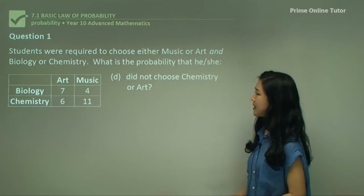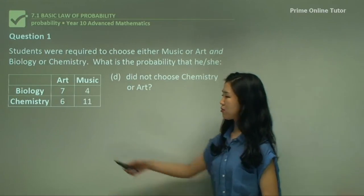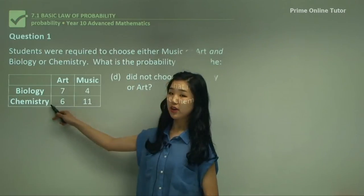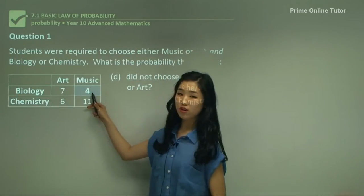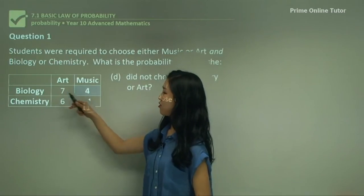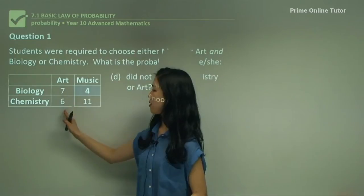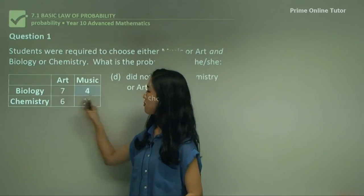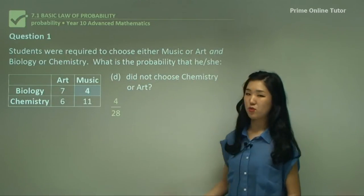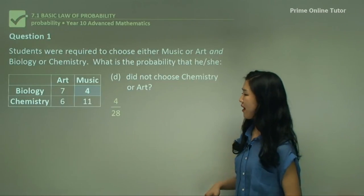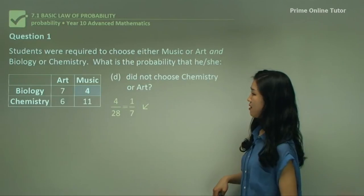Now D — did not choose chemistry or art. Well, if they didn't choose chemistry — so this whole row here — or art, only four students chose biology and music. That's not going to be art or chemistry. It's not going to be this column, and not going to be this row. So it must be just these students here — 4 out of the 28 students. Simplify it and you get 1 over 7.